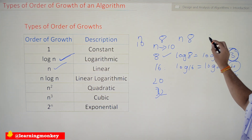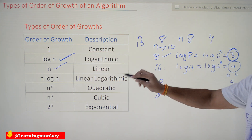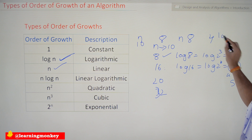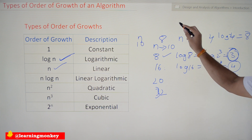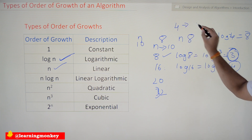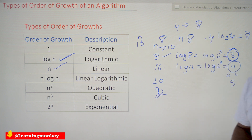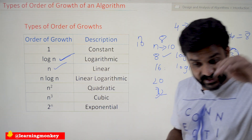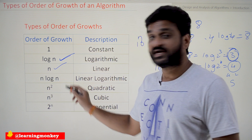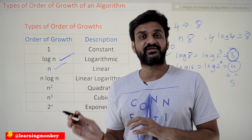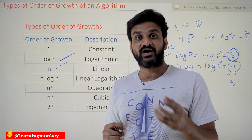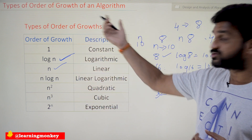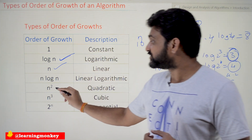Linear-logarithmic means n log n. For example, if the number of inputs is 4, it is 4 into log 4. Log 4 is 2, so 4 into 2 equals 8 — so 8 steps will get executed for an input of 4. We will try to solve lots of problems on this. For now, try to get familiar with the different types of order of growth.